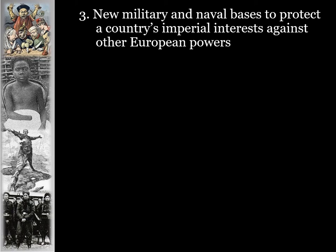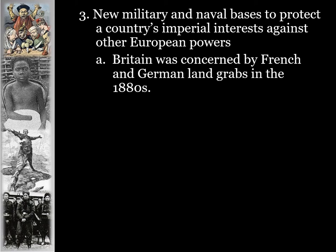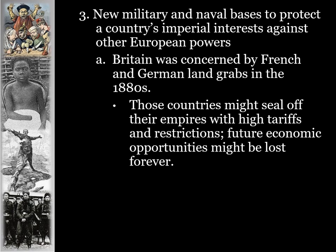New military and naval bases were built to protect a country's imperial interests against other European powers — it became a land grab between nations. Britain was concerned by French and German land grabs in the 1880s, so they were more willing to send troops to protect their interests in Africa and Asia. These countries might seal off their empires with high tariffs and restrictions, making future economic opportunities potentially lost forever. Nations fighting over spheres of influence was just one step away from fighting each other outright in World War I.